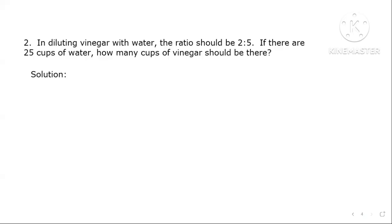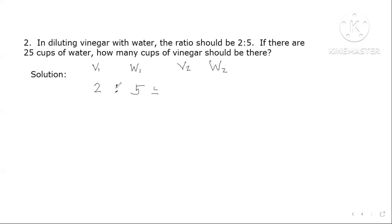Let's continue with number 2. In diluting vinegar with water, the ratio should be 2 to 5. If there are 25 cups of water, how many cups of vinegar should there be? We are given the ratio 2 to 5, where 2 is for the vinegar — labeled v₁ — and 5 is for the water — labeled w₁. To make a proportion, this must equal the ratio of v₂ to w₂. We're asked to find the number of cups of vinegar if there are 25 cups of water, so w₂ is 25 and v₂ is missing.